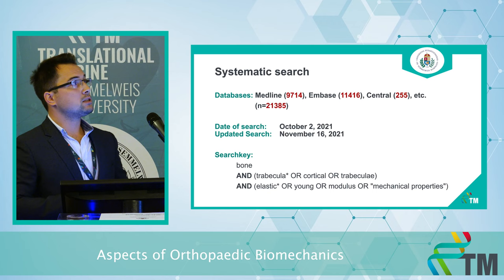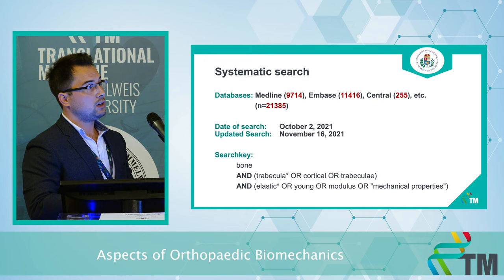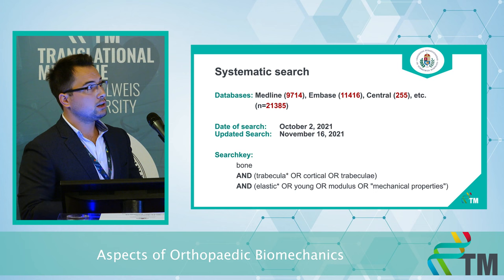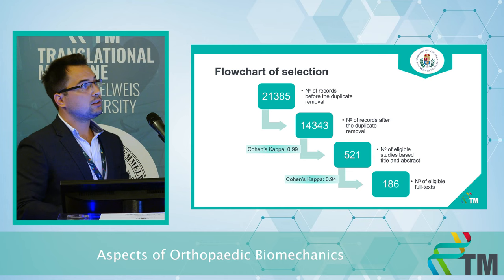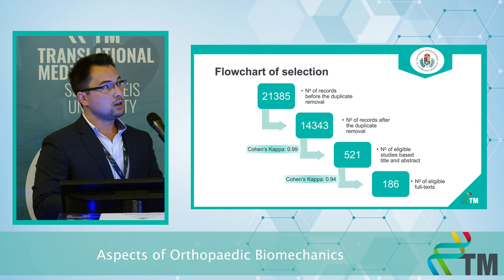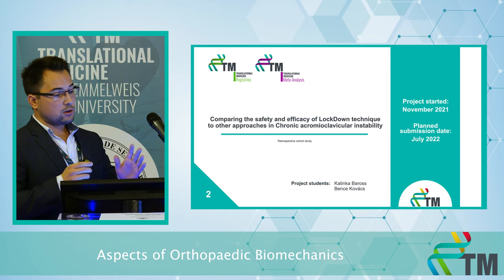Our systematic search started in October. However, I had to update it, and the updated search was approximately three weeks ago, with which we acquired more than 20,000 records. After duplicate removal, we reached approximately 14,000, and from abstract and title selection we decreased the number to approximately 500. With the full-text selection, we reached approximately 200 records.